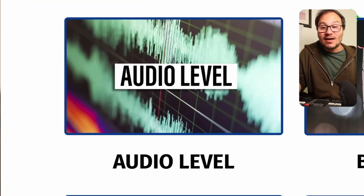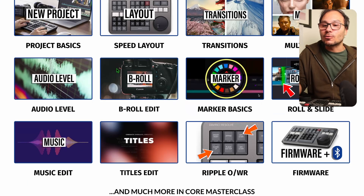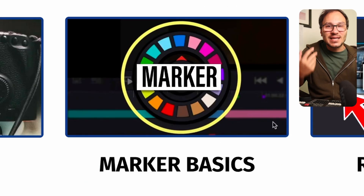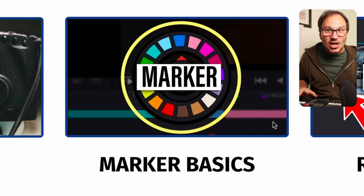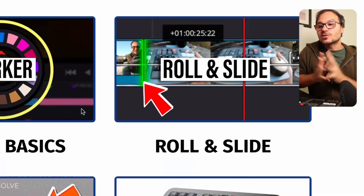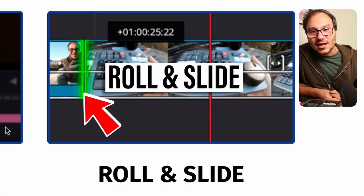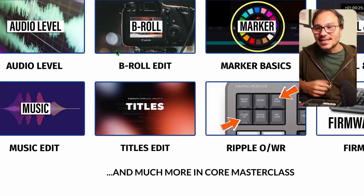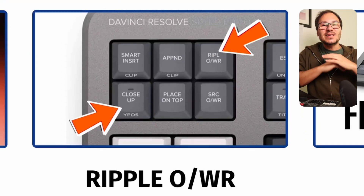We will talk about audio leveling, b-roll editing, and how to add those elements. We will also cover marker basics — how to add and change markers using the search dial, because that's the cool thing about this device: you can basically replace your mouse with it. We will also talk about roll and slide functions, how to edit music, edit titles, and ripple trim and overwrite.